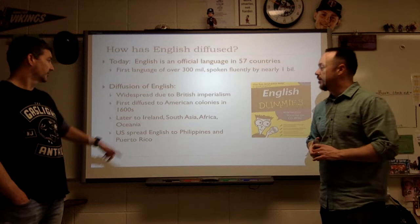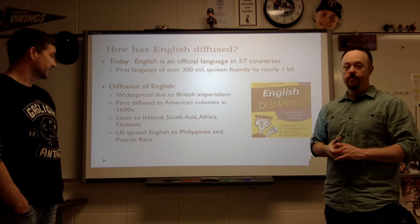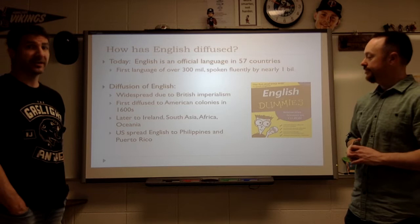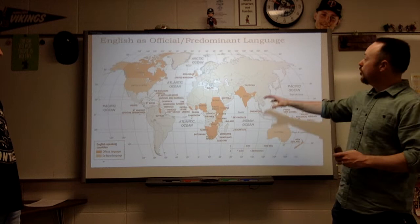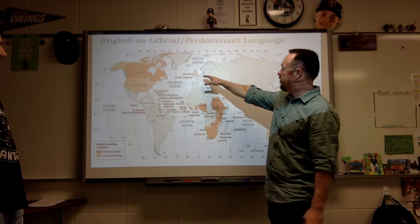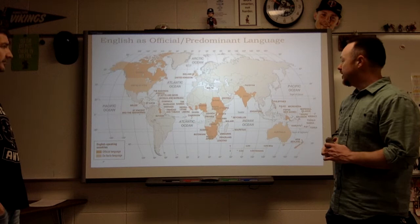English continued to spread to other places later by the United States, not just Britain. The United States also diffuses and imperializes — the Philippines was an American colony, Puerto Rico as well. Indigenous people were forced to speak English, and there's a little bit of cultural genocide happening along with that. Here's a map of English as an official or predominant language — pretty much global, reflecting the diffusion of Great Britain and the United States.